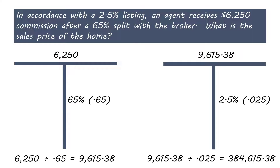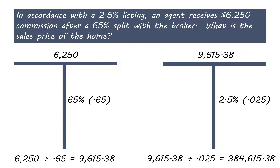The commission rate of 2.5% will go on the bottom right. We are looking for the sales price, which represents the whole or total. The T-bar indicates that we need to divide. $9,615.38 commission divided by a commission rate of 2.5%, or 0.025, equals a sales price of $384,615.38.